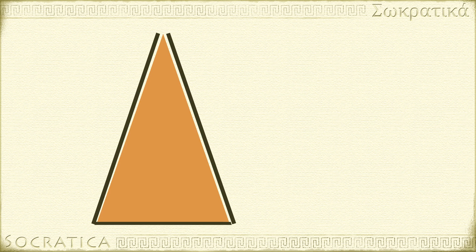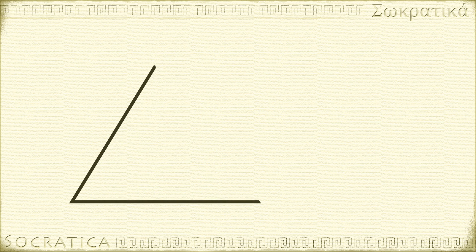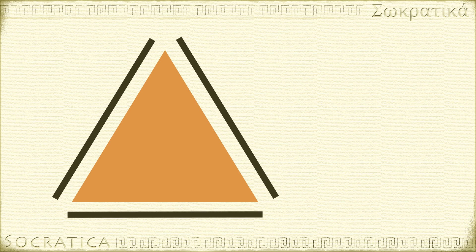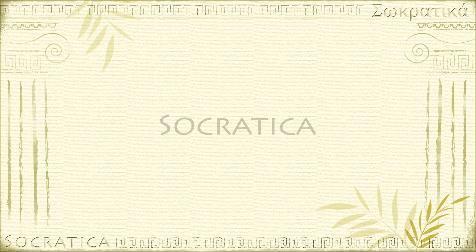A triangle where exactly two sides are the same length is called an isosceles triangle. A triangle where all sides are the same length is called an equilateral triangle.